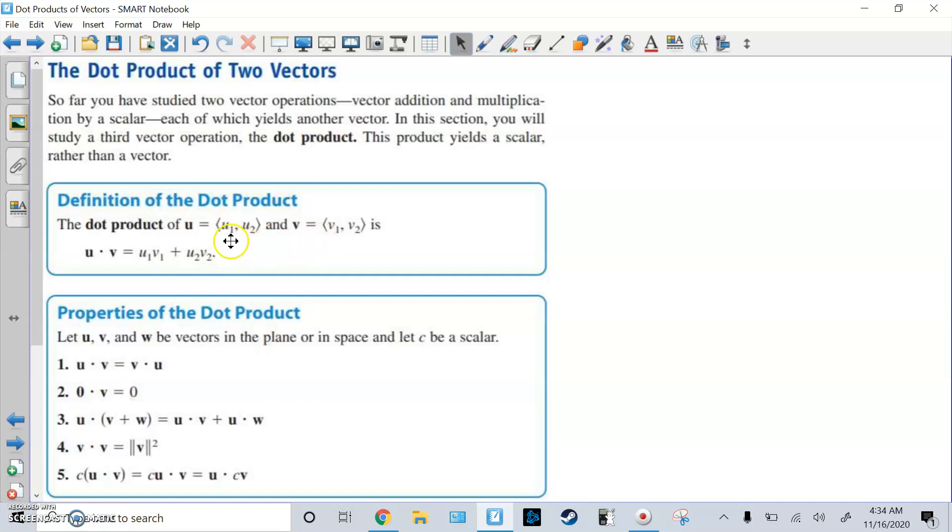it's going to be multiply the first two things, u1, v1. Multiply the second things, u2, v2, and just add them together. Alright, and then here's some properties as well.